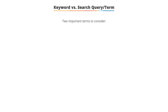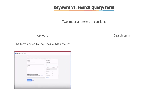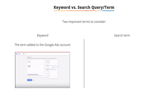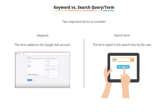We're going to use two important terms throughout this video: keywords and search terms. A keyword is what you put into your Google Ads account, and when the keyword matches the search term, your ad can be displayed. A search term, also known as a search query, is what a user types into a search box in a search engine. When the search term matches your keyword, an ad can be displayed.